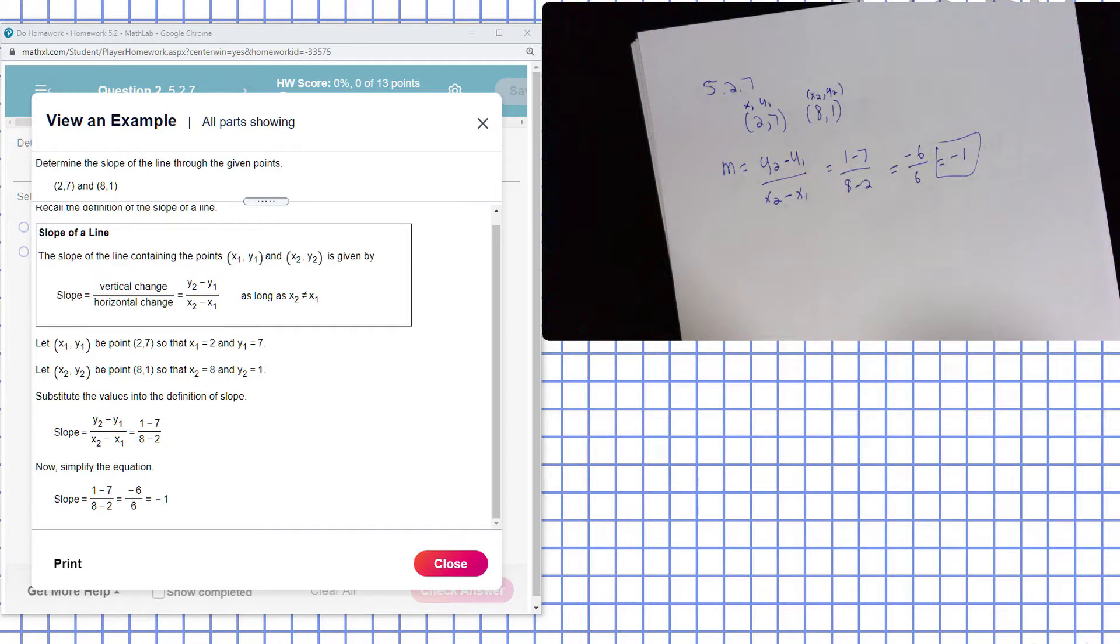Determine the slope of the line through the given points. So the first thing, this is the slope formula here. It's simply the change in y divided by the change in x. The change in y coordinates divided by the change in the x coordinates.